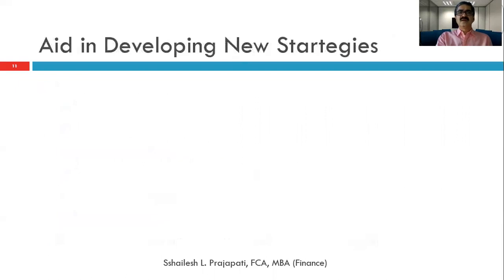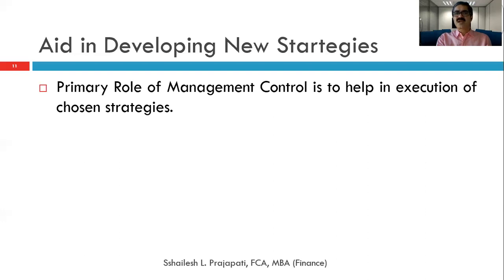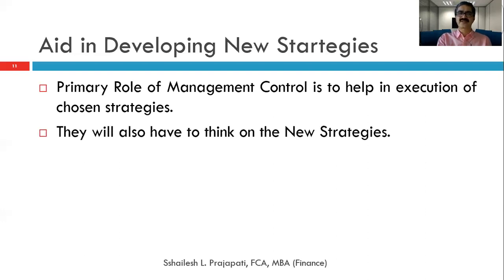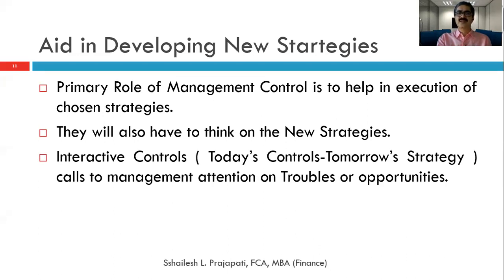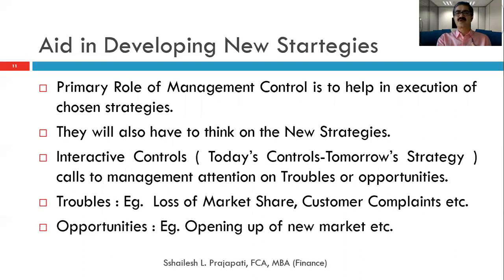Nowadays there are many systems by which a manager's performance is evaluated. We will also cover aids in developing new strategies. The primary role of management control is to help in execution of chosen strategies. Through interactive controls, management attention is drawn to troubles or opportunities — such as loss of market share, or a new market opening up — and managers place emphasis on developing new strategies accordingly.